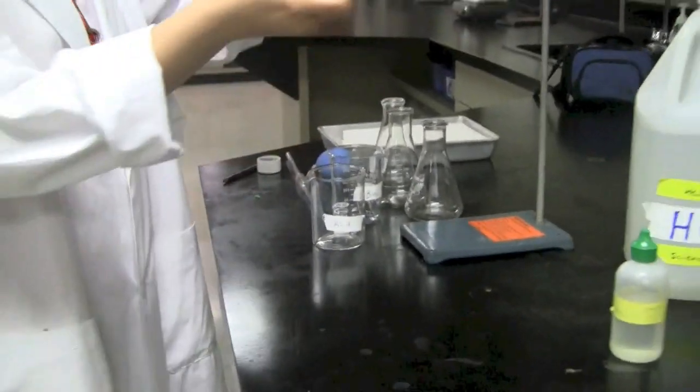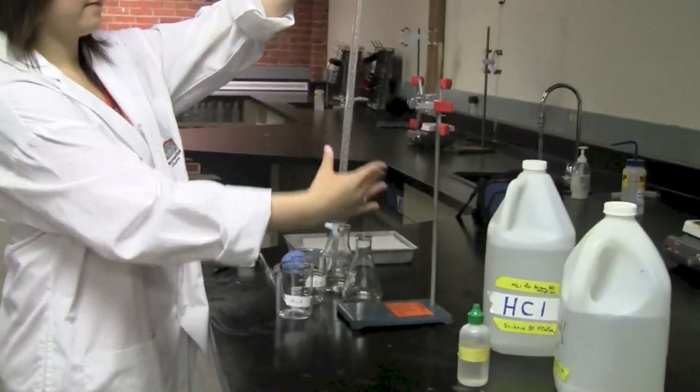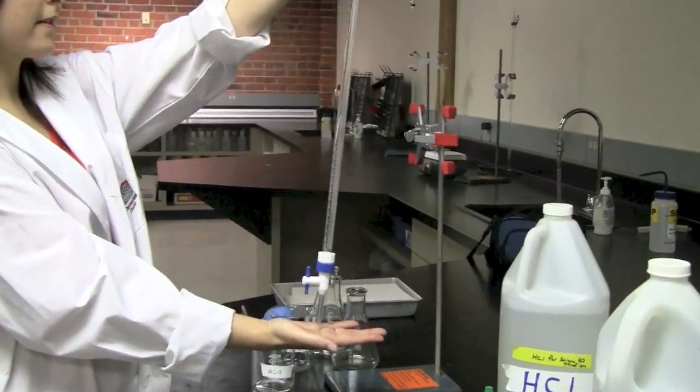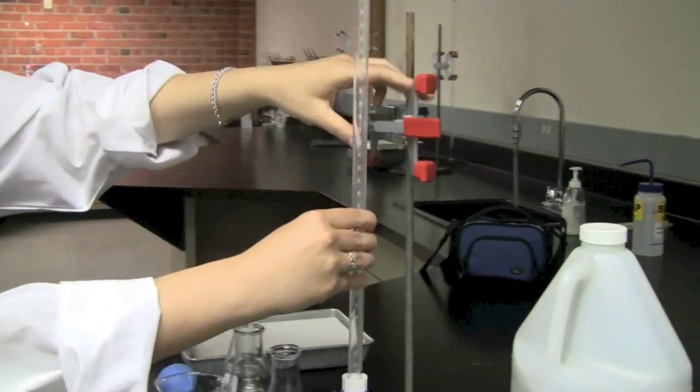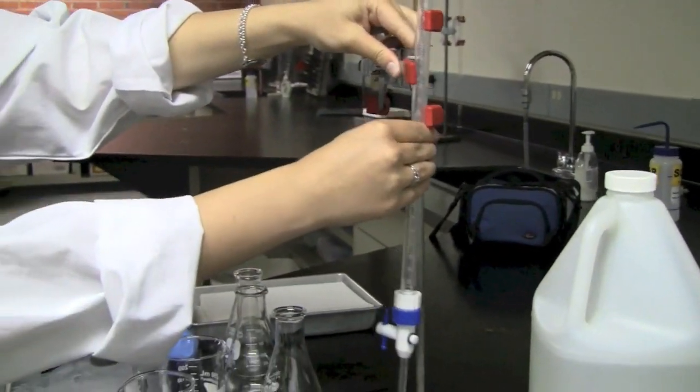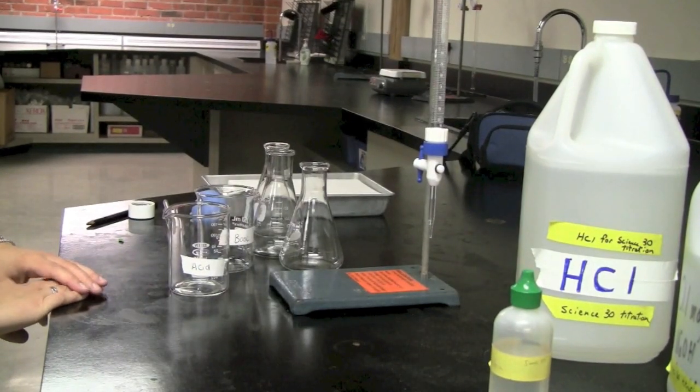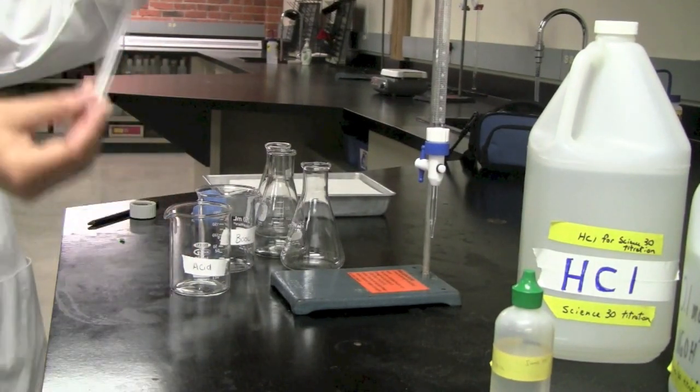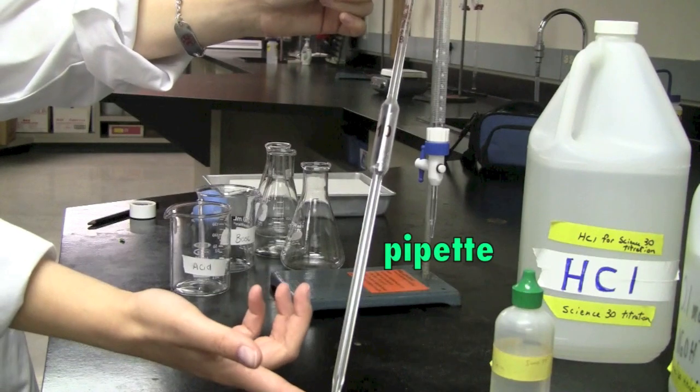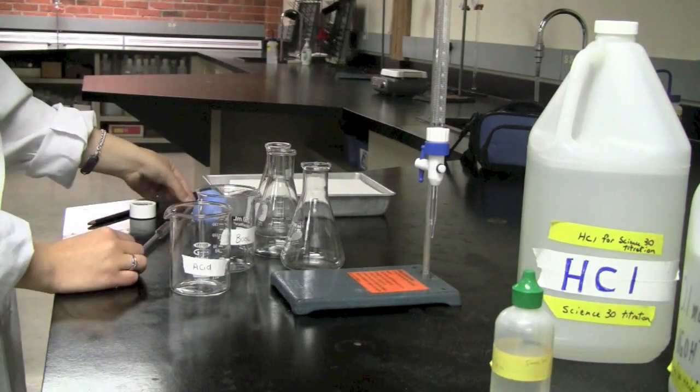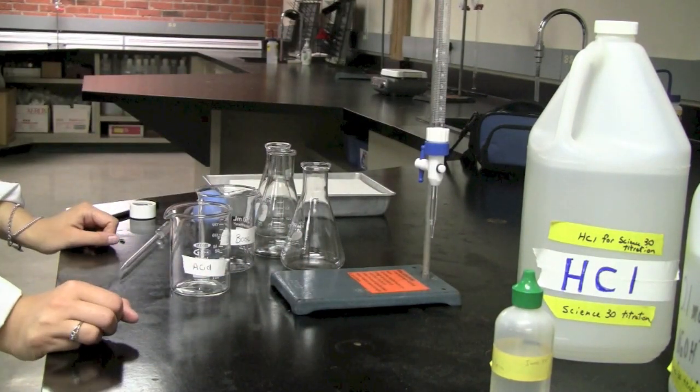So let's take a look at the burette. It's this very big, long tube and we're going to put it with the clamp. So that's the clamp stand. We're going to need a 10 milliliter micropipette. That's the pipette right there. That will give us a precise measurement of 10 milliliters of the substance that we're going to use.